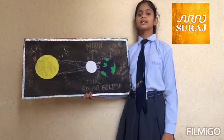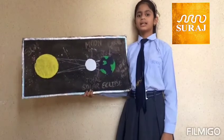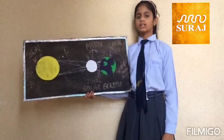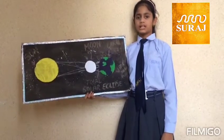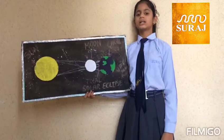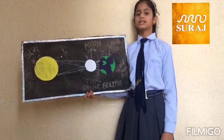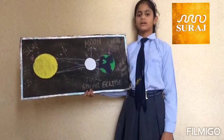When the moon completely hides the sun, it is known as total solar eclipse. When the moon partially hides the sun, it is known as partial solar eclipse.